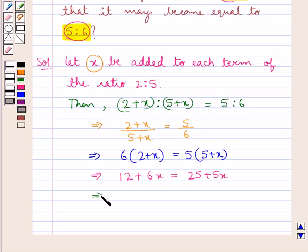Now to find the value for x we will transpose 5x to the left hand side and 12 to the right hand side. So we have 6x minus 5x is equal to 25 minus 12, or we get x is equal to 13.